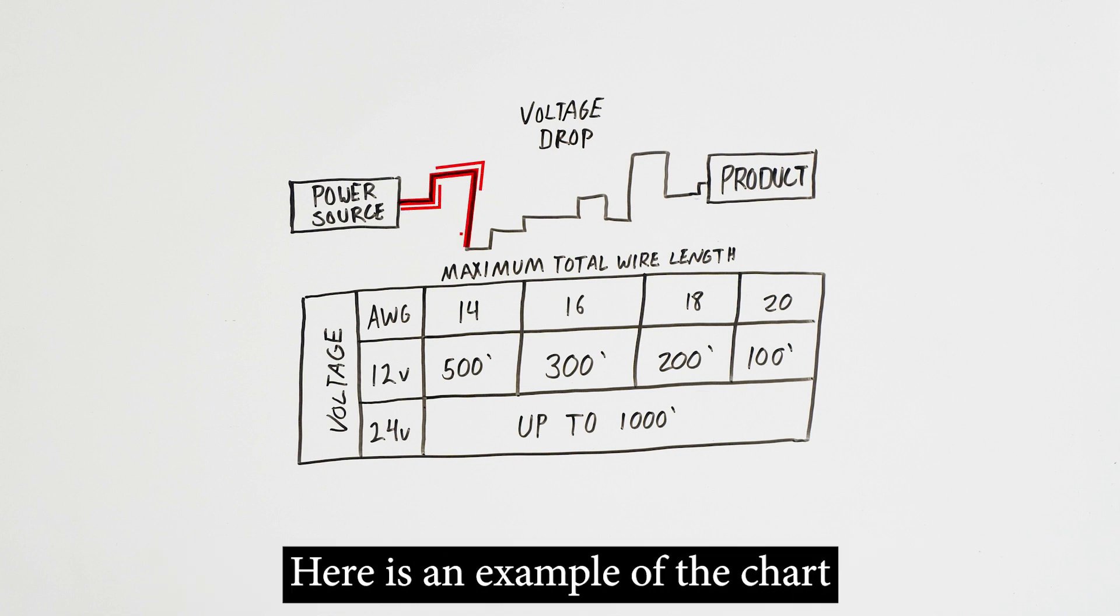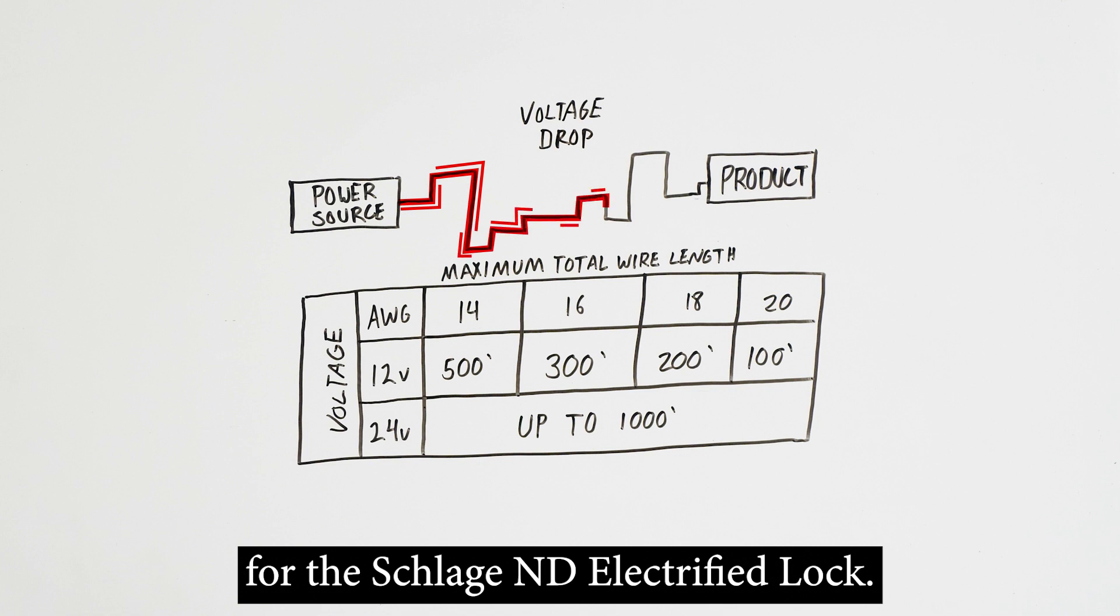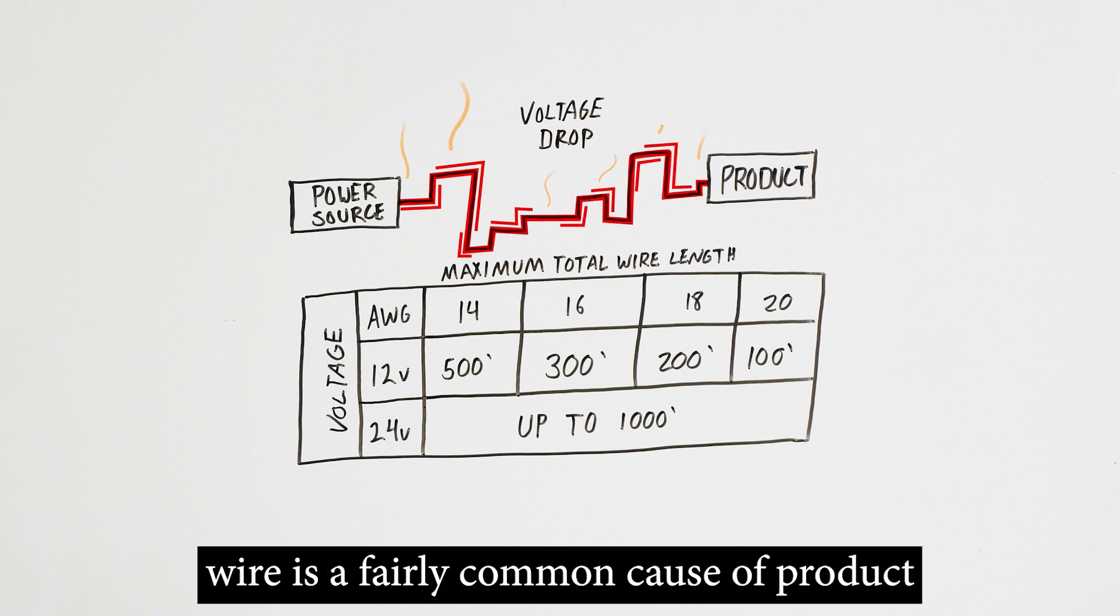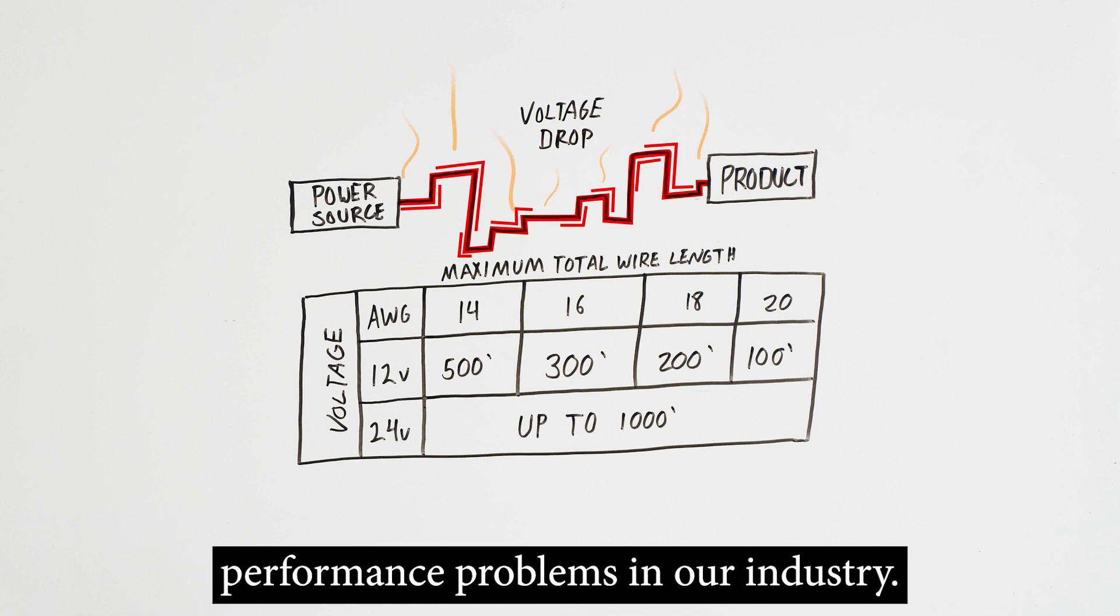Here is an example of the chart for the Schlage ND electrified lock. By the way, the use of the wrong gauge of wire is a fairly common cause of product performance problems in our industry.